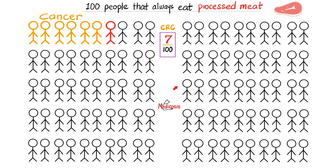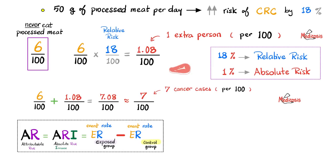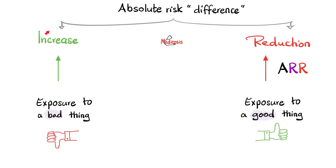Whereas 18% is the relative risk, the absolute risk is only 1%. With absolute risk difference, we can have absolute risk increase if you're being exposed to a bad thing such as processed meat, cigarette smoking, asbestos, lead poisoning, or arsenic poisoning. Or it could be absolute risk reduction such as applying a seat belt, locking your front door, vaccinations, prophylactic therapy, or regular maintenance for your car — all things supposed to make you safer and reduce your risk.